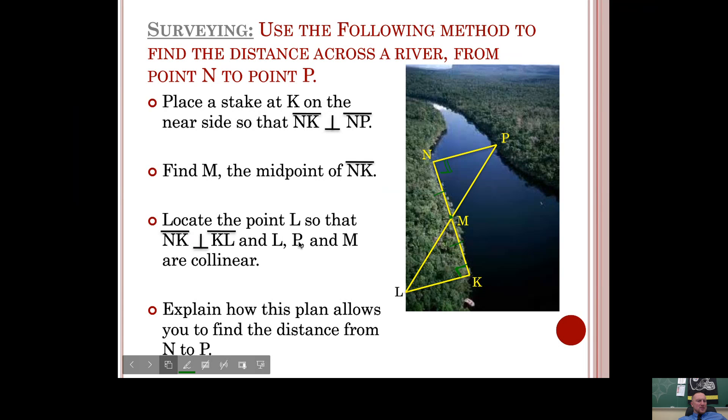And we want points L, P, and M to be collinear. So we could have put this point L in a lot of places to make it perpendicular to that segment, but there's only one place that you can put it where all of these are going to be in a line. Now what's happening there is you have vertical angles here as well that are congruent.